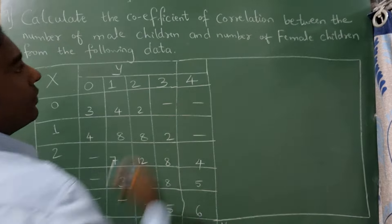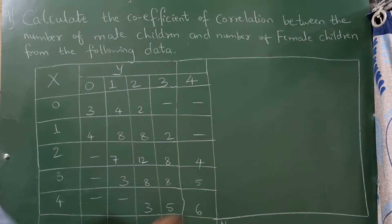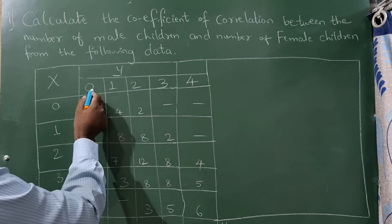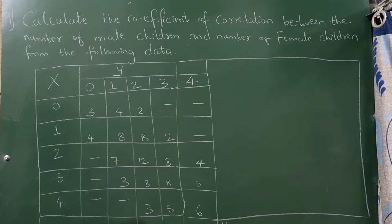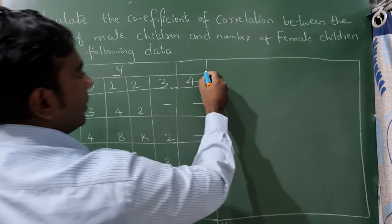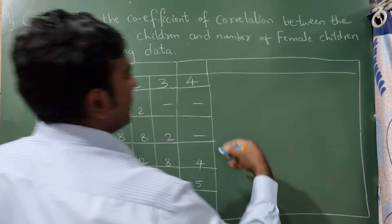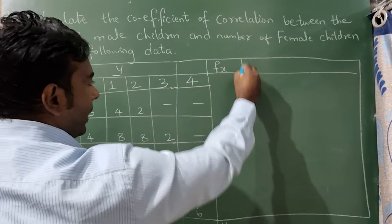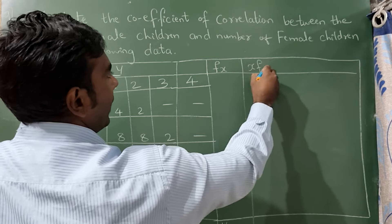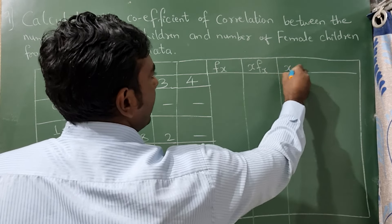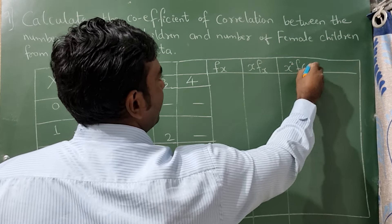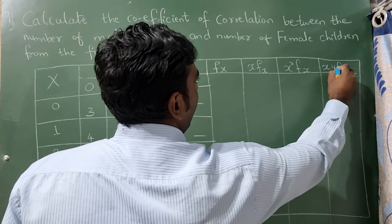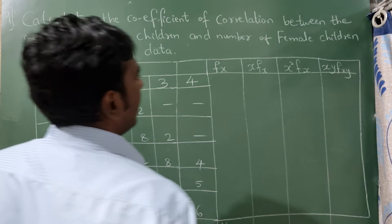We need to calculate the coefficient of correlation. In the given table, x takes values 0, 1, 2, 3, 4 and y also takes values 0, 1, 2, 3, 4. We need to draw four extra columns: fx, x·fx, x²·fx, and xy·fxy.